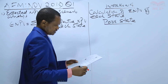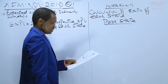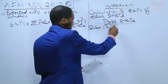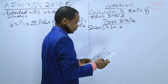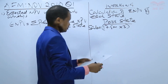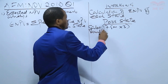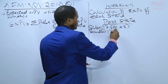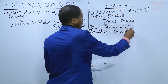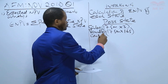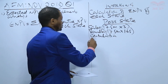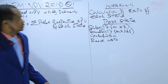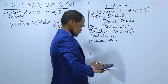From the data given, we have annual sales of 17.5 million units times the sales price of 3 shillings. Then we deduct the variable cost: 17.5 million times 1.65 shillings. The difference gives us the contribution, then we deduct the fixed cost of 10 million.